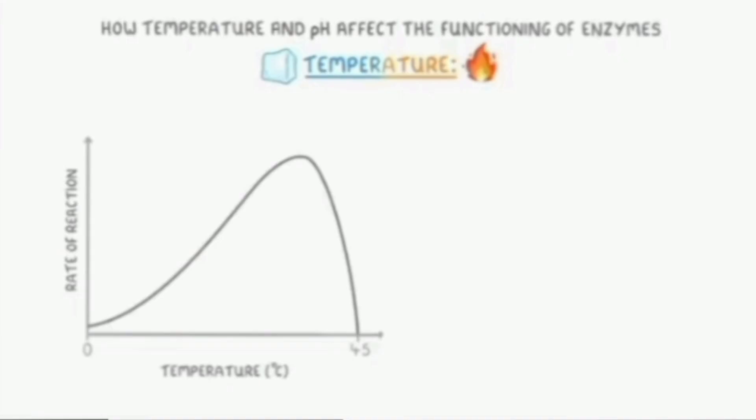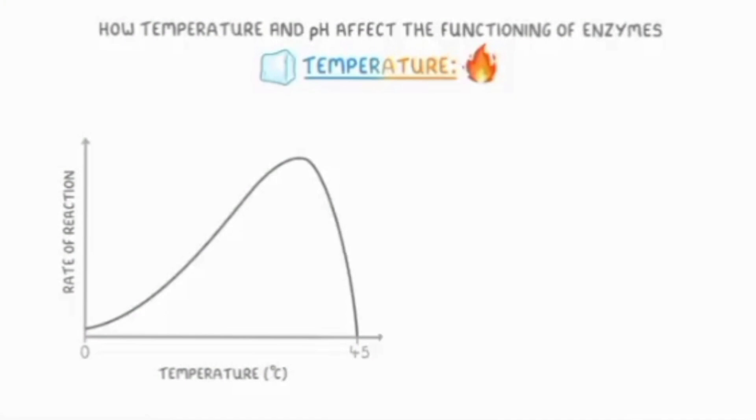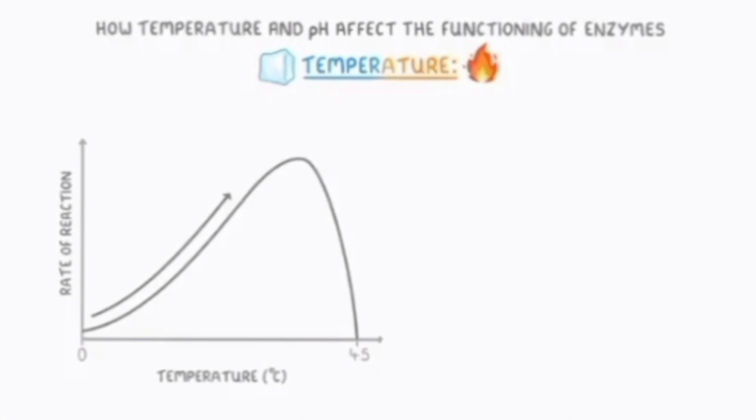This graph shows how an enzyme catalyzed reaction is changing with temperature. In the first part of the curve, as temperature increases, the rate of reaction also increases. Higher temperature generally increases molecular movement and the rate of reaction increases because of the amount of collisions. The substrate will increase collisions with the active site of the enzyme.